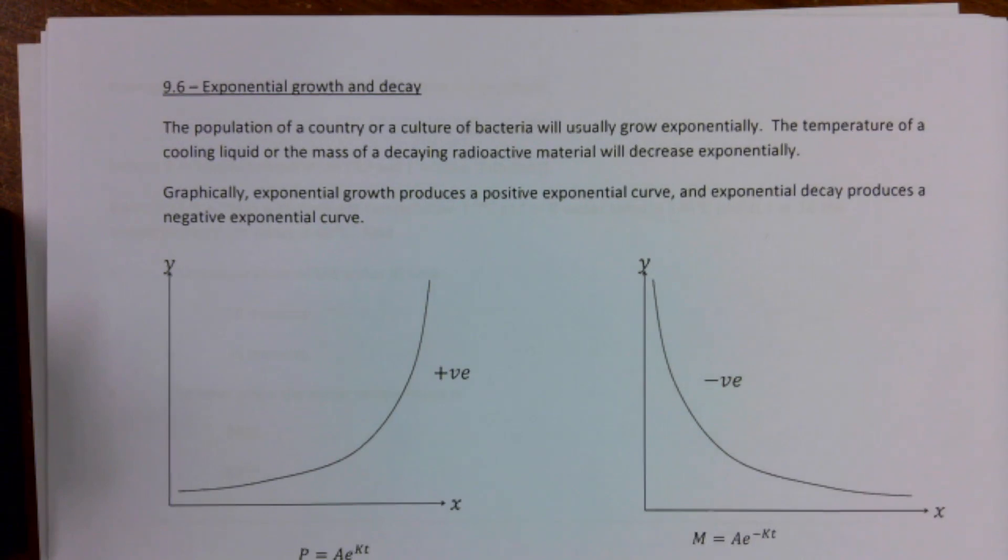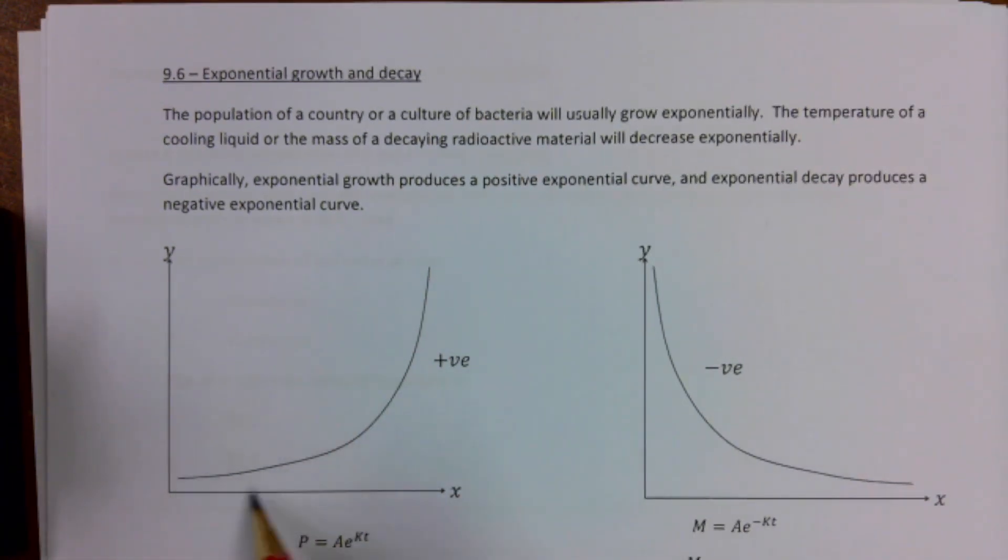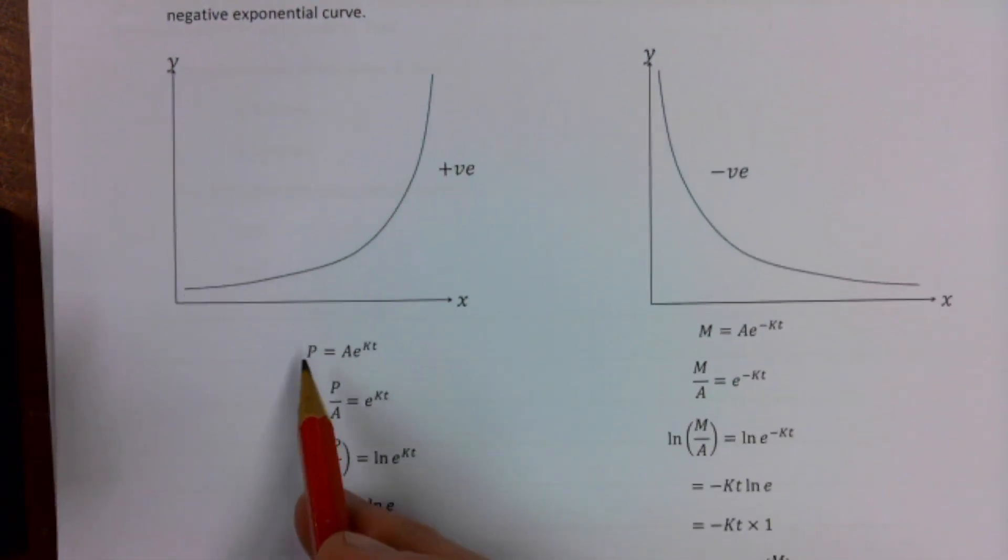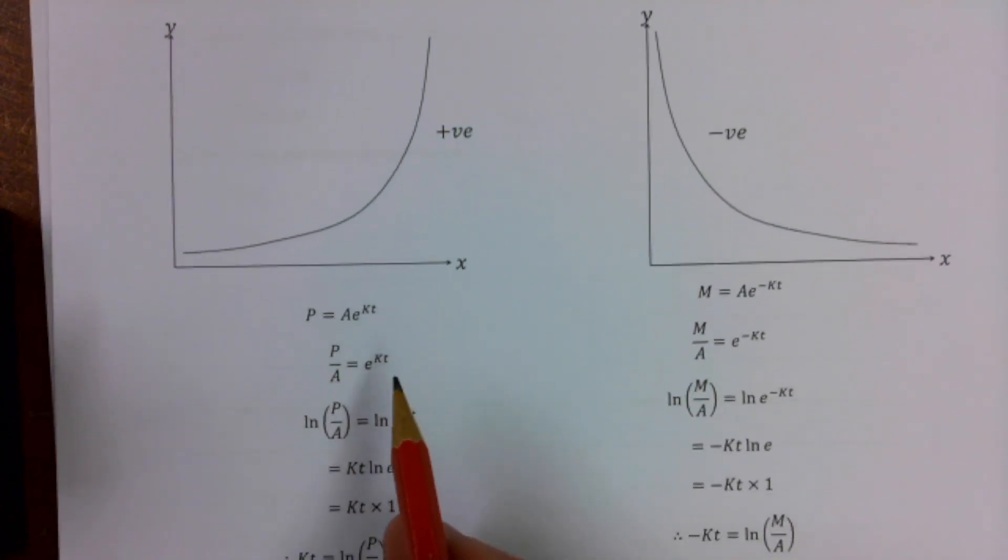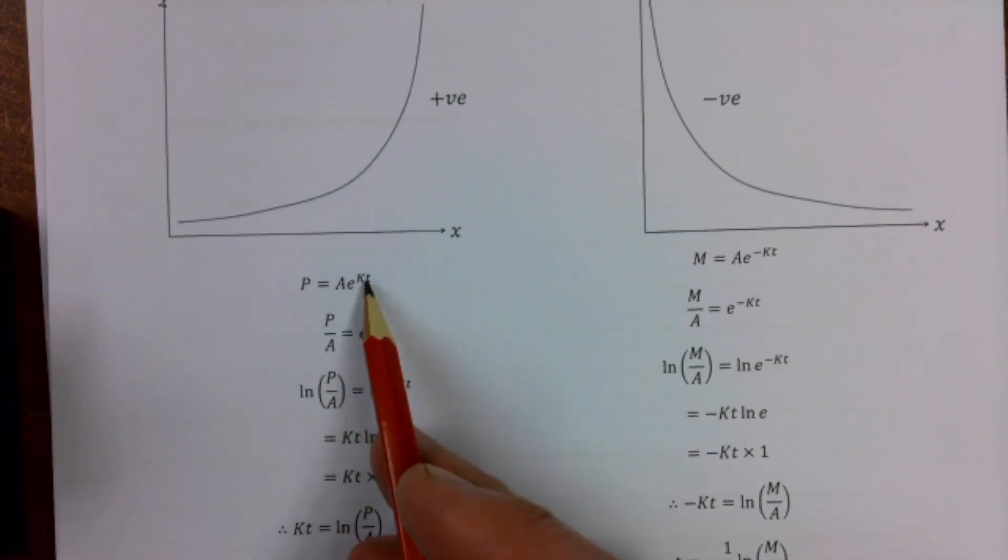If we look at some of them, this curve would have an equation P = Ae^(kt). So what am I doing here? If we're going to try and get the t bit on its own by doing a bit of rearranging.